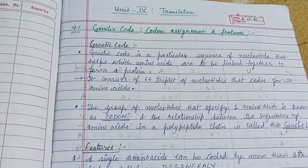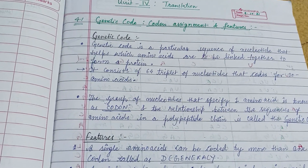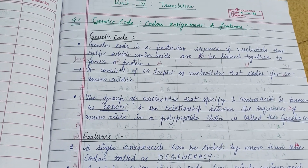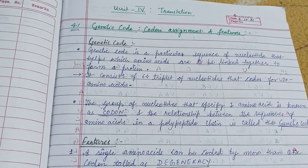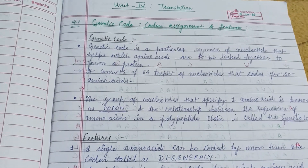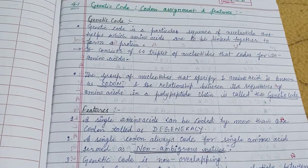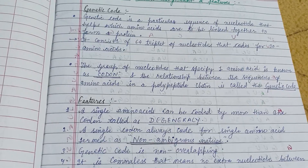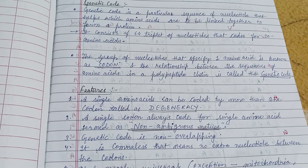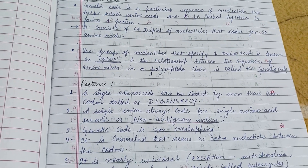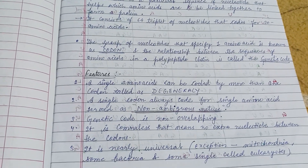Good morning to all of you. This video is about the genetic code, codon assignment and features. It is included in unit 4 of the CC2 core syllabus. The genetic code is a particular sequence of nucleotides that specifies which amino acids are to be linked together to form a protein.